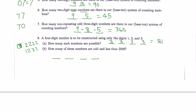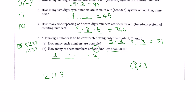How many of these numbers are odd and less than 2000? Odd means the last digit is 1 or 3 — 2 choices. Less than 2000 means the first digit must be 1 (starting with 2 would give at least 2000) — 1 choice. The middle two digits each have 3 choices. So 1 times 3 times 3 times 2 equals 18.